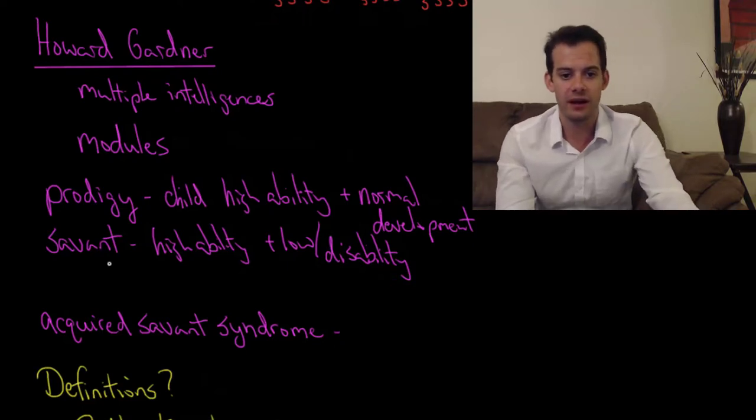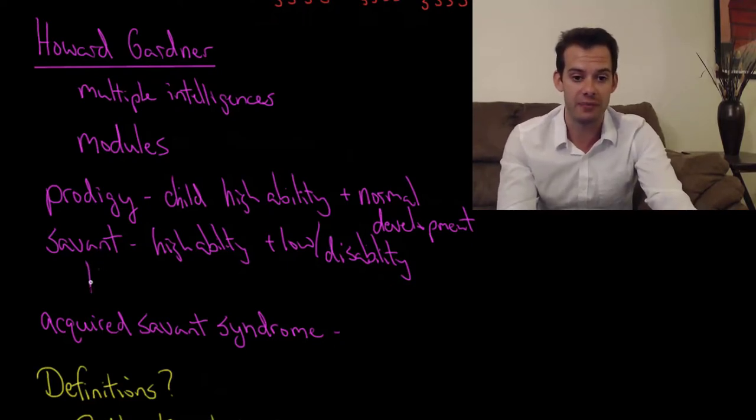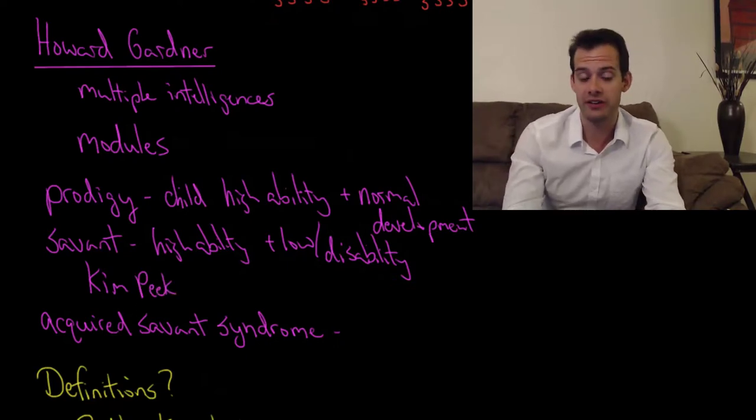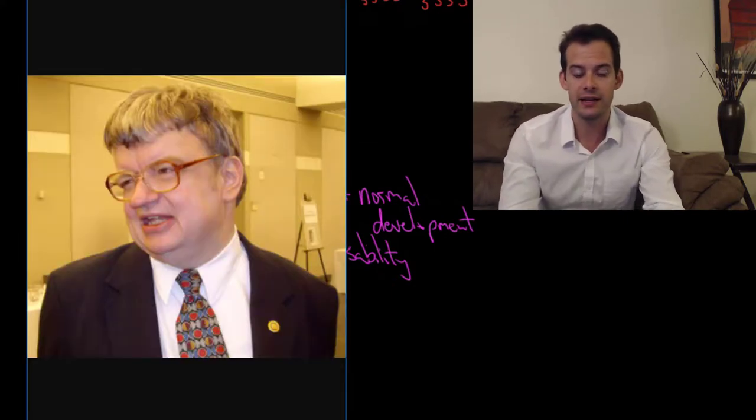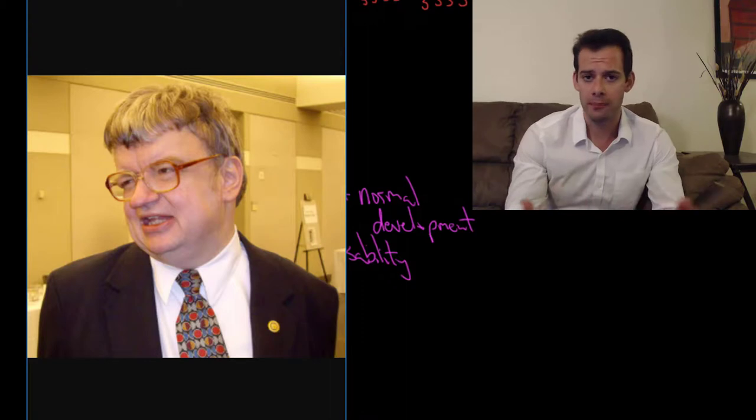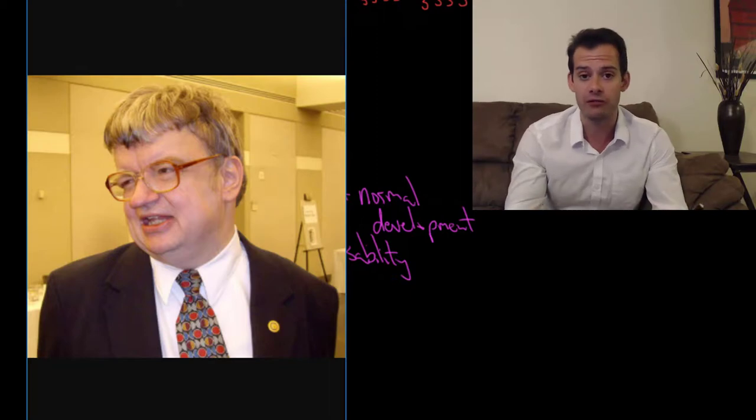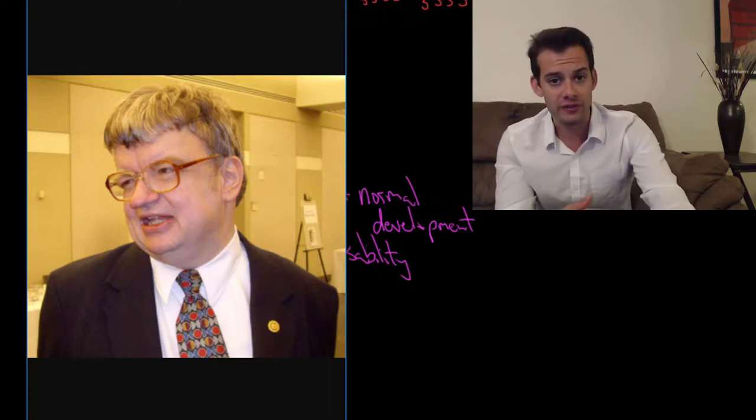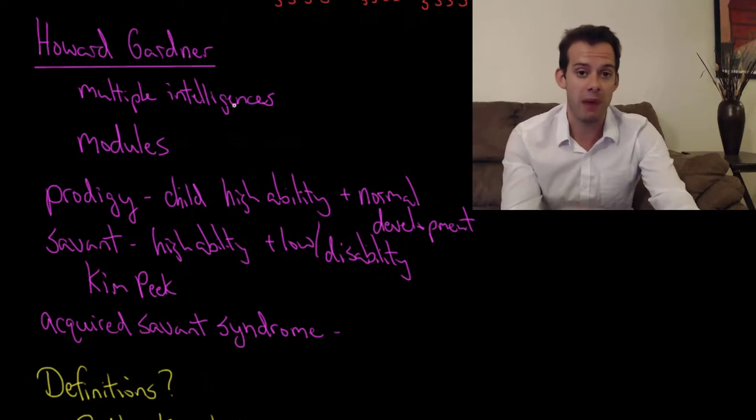This would be perhaps considered stronger evidence for this idea of separate modules of intelligence. Probably the most famous savant in recent years is a man named Kim Peek. Kim Peek was the inspiration for Dustin Hoffman's character in the movie Rain Man. Kim Peek had extraordinary ability in some areas. He had a phenomenal memory. He could do mental calculations. But he had disability in other areas. He wasn't able to brush his own hair. He needed to be cared for.